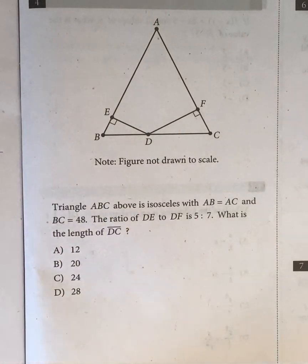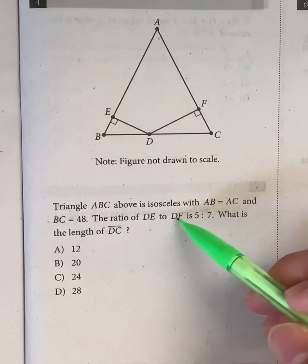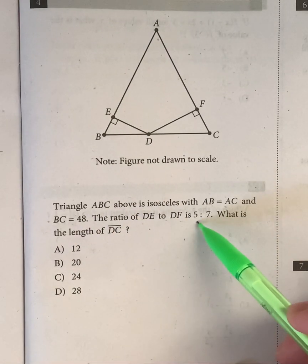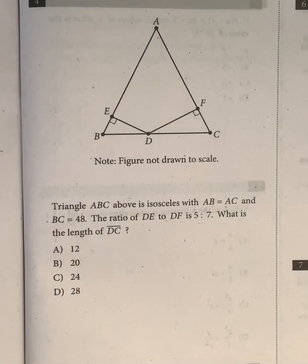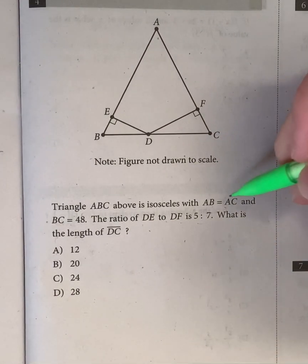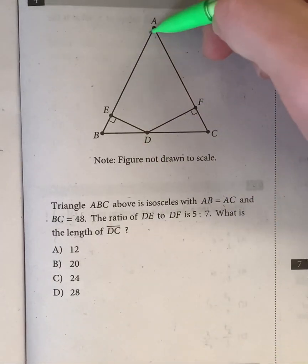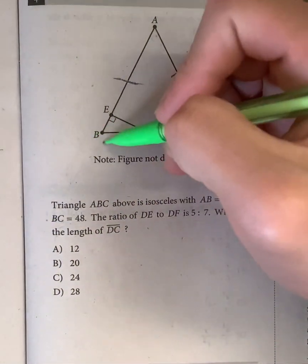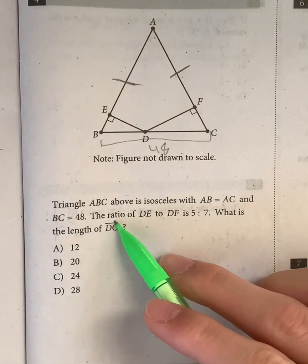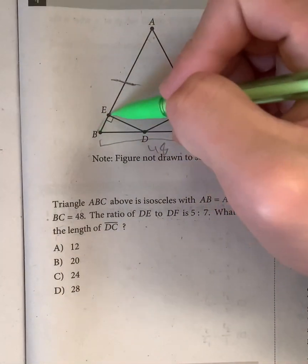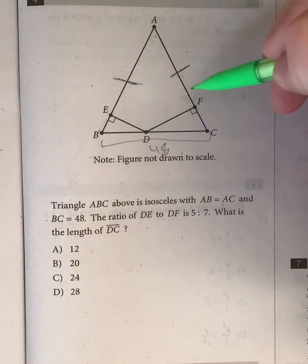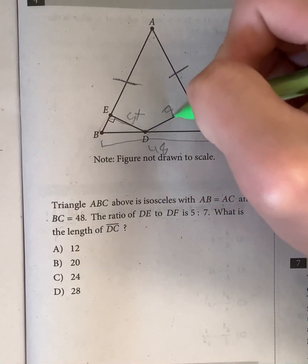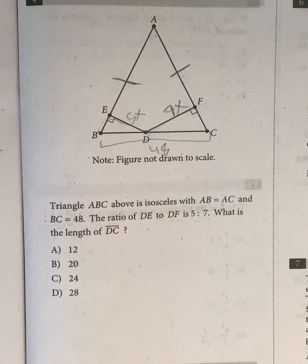Okay, moving on. So we have question 4 right here. We have this geometry question. So triangle ABC above is isosceles, with AB = AC, and BC = 48. The ratio of DE to DF is 5 to 7. What is the length of DC? So in order to do this question, what we need to do is write down or just jot down everything we're given. So AB = AC. So these two sides are equal. And BC = 48. So this whole thing right here is 48. The ratio of DE to DF is 5 to 7. So I'll just call this 5x, and I'll call this 7x, where x is a number that we're not given yet.